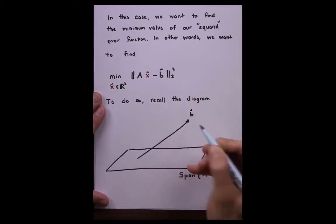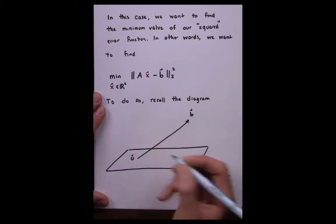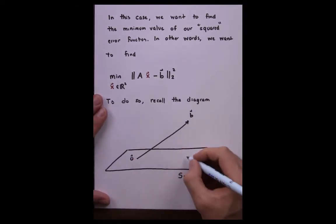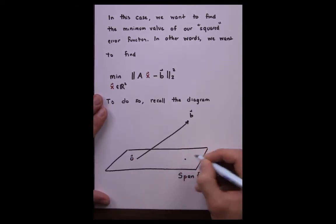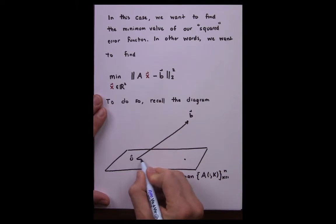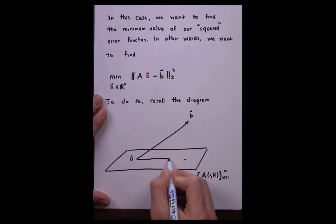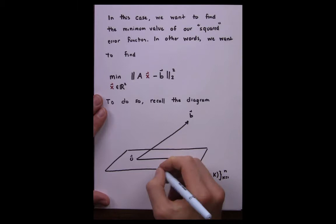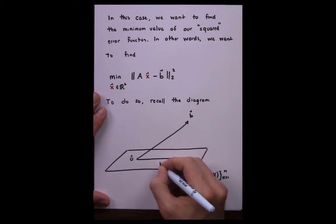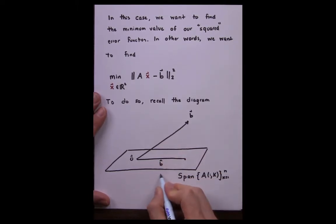In this case, we connect the zero vector to the vector B, and we also draw the component of B that actually can be written as a linear combination of the columns of A. We call that component B hat.